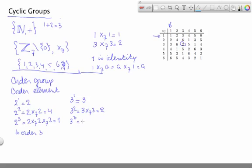In the same sense, 3 to the power 3 is 27 divided by 7 gives me the remainder 6. 27 minus 21. 3 to the power 4 then gives me 81, a remainder 4.